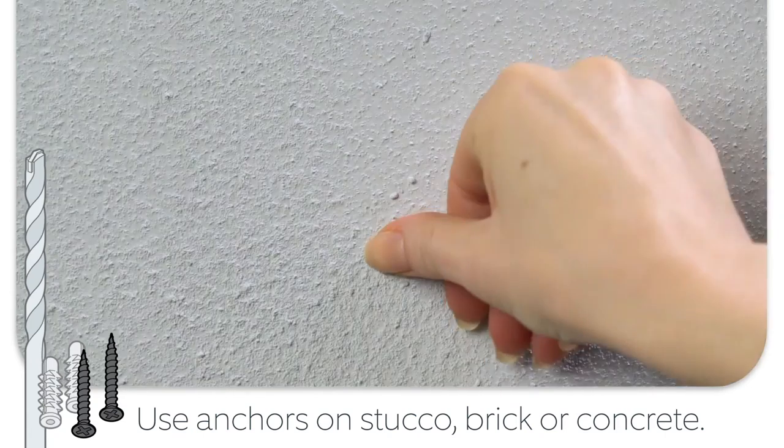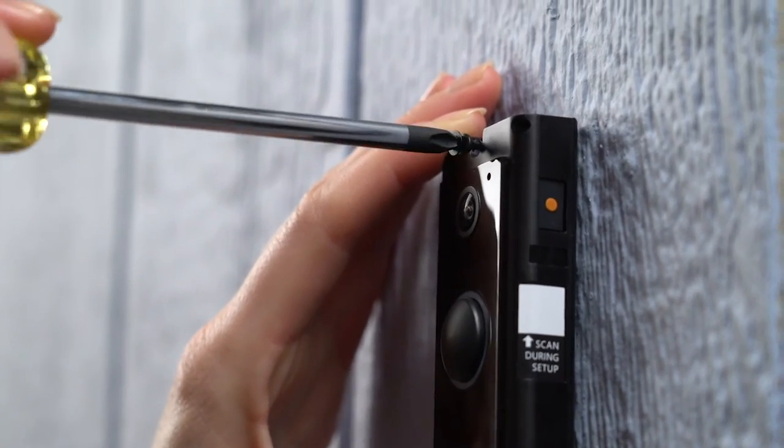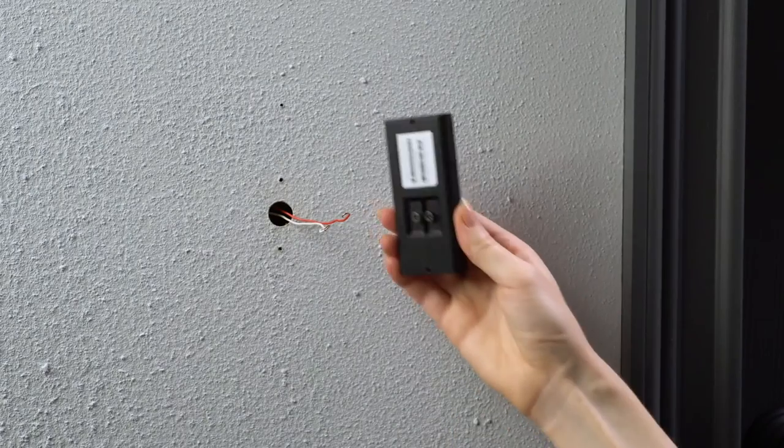If you're installing on wood or siding, you don't have to drill any holes. Next, connect the doorbell wires to your Ring doorbell.